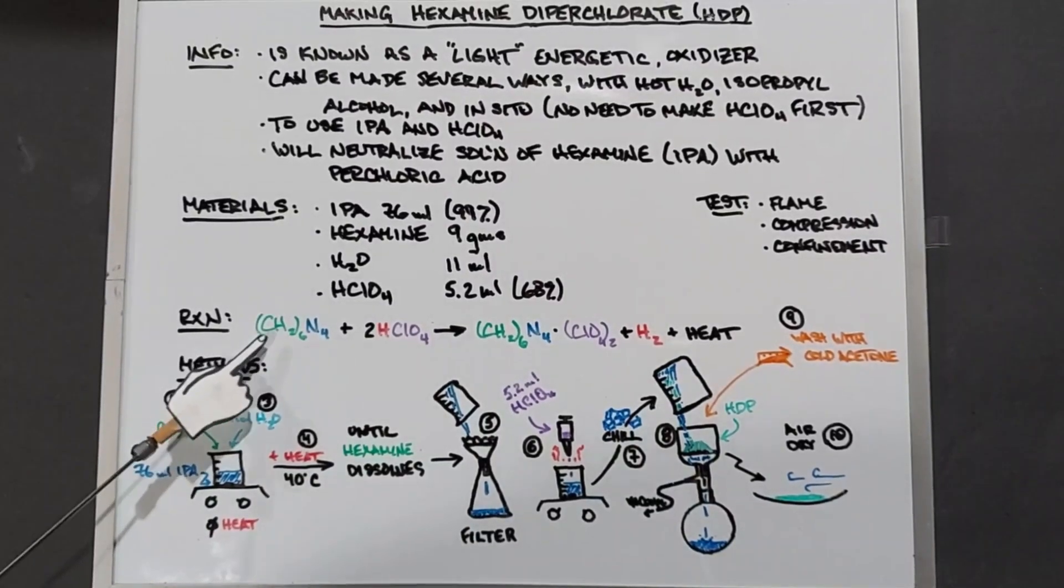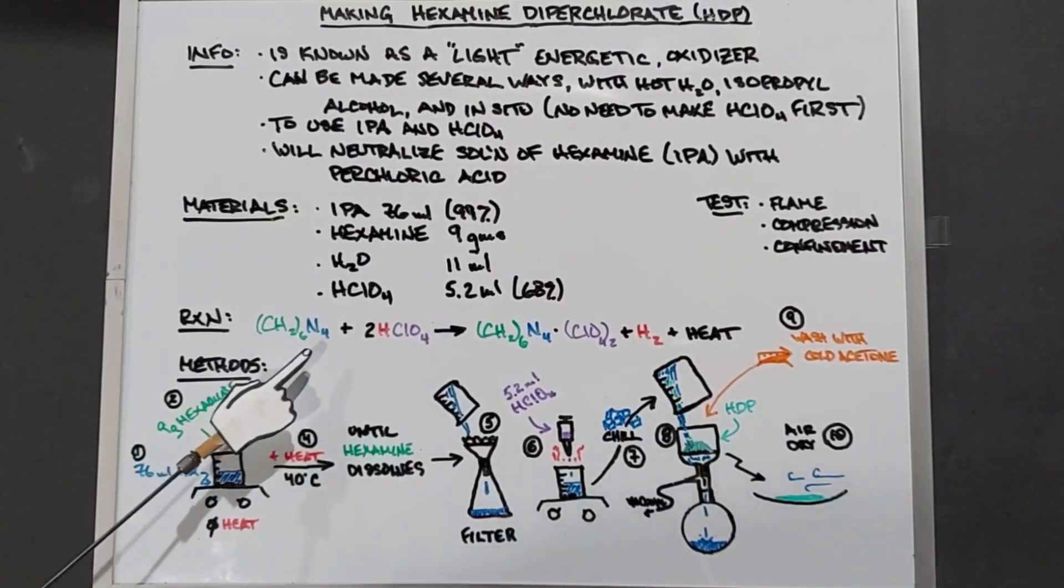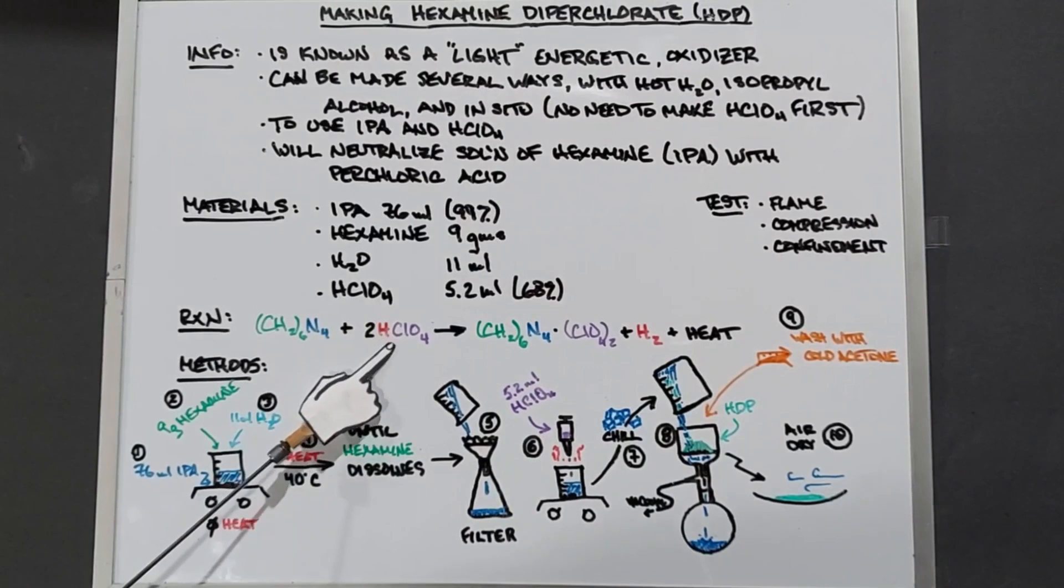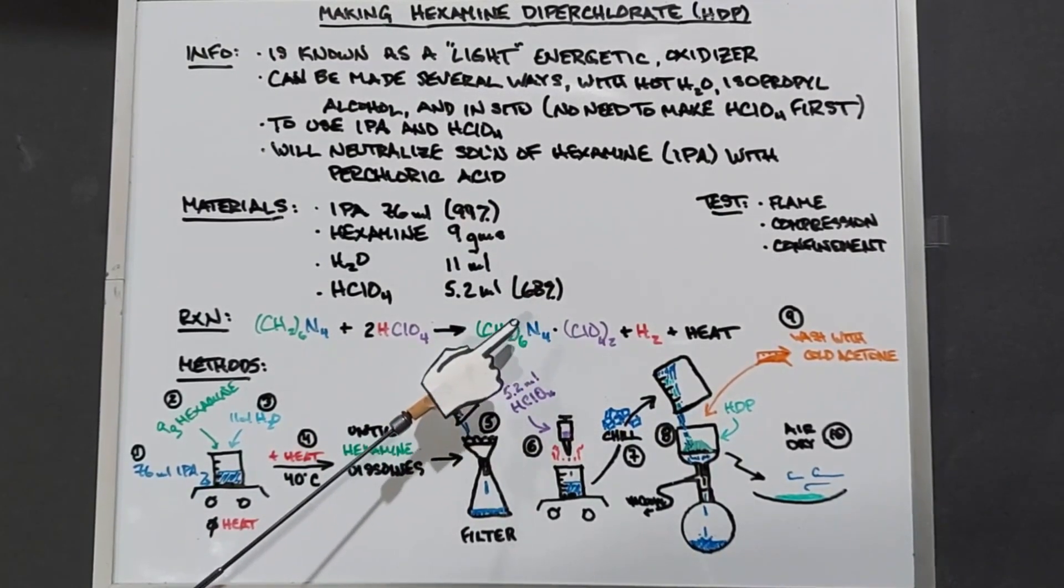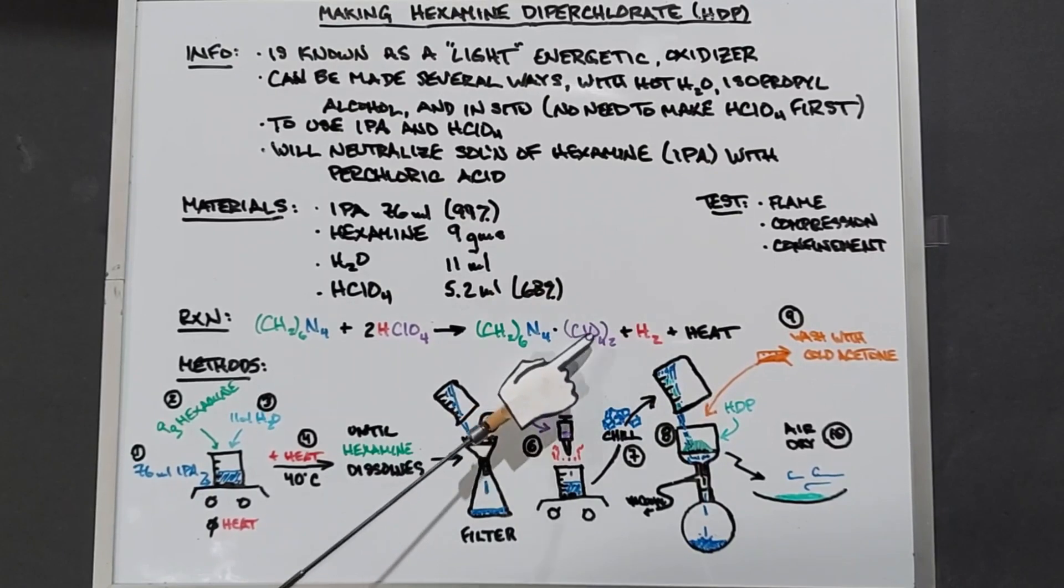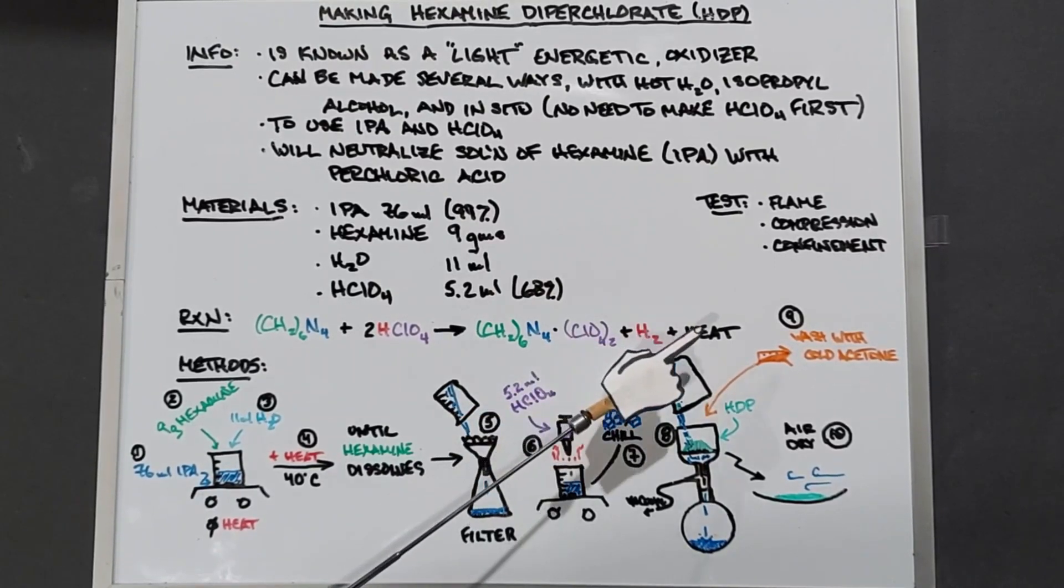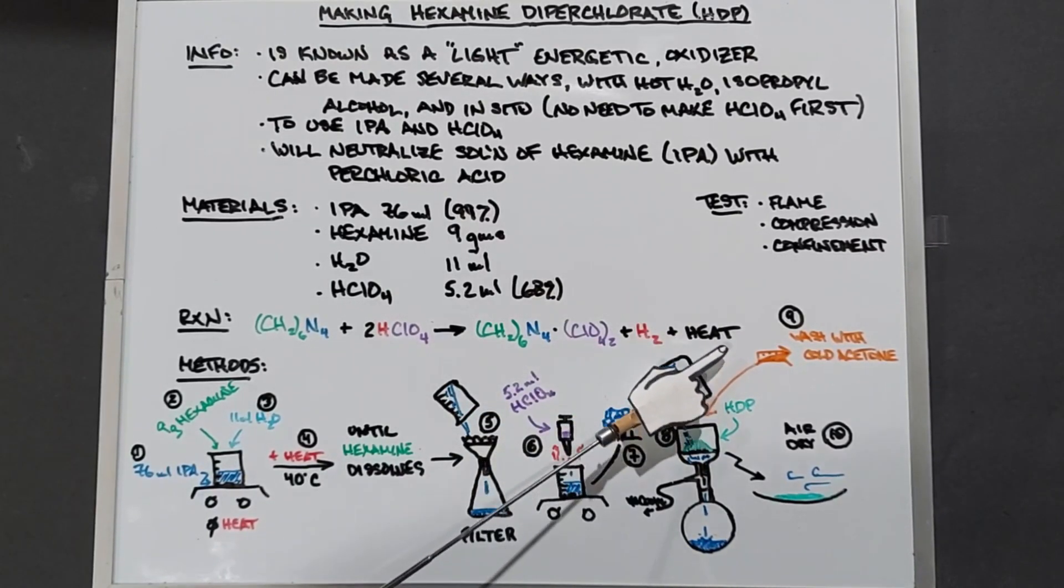The reaction is as follows: this is hexamine (CH2)6N4 and we're going to add to that two perchloric acids. What we'll end up with is the hexamine (CH2)6N4 bonded to two perchlorates. The hydrogen will be released and it's also exothermic so we produce some heat.